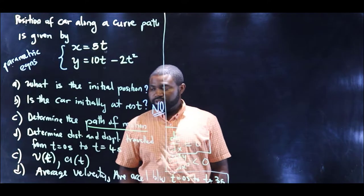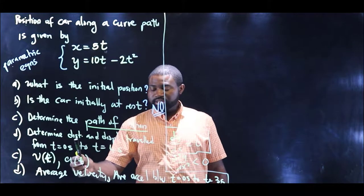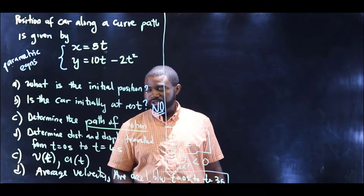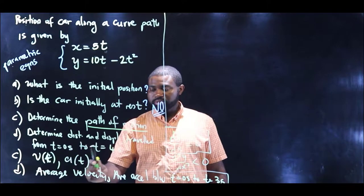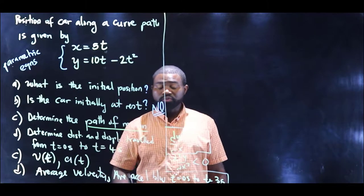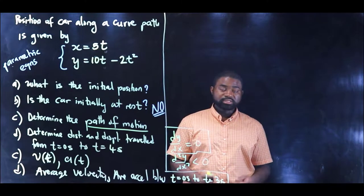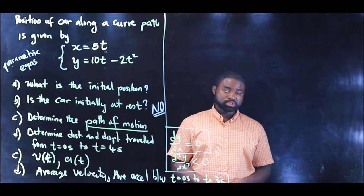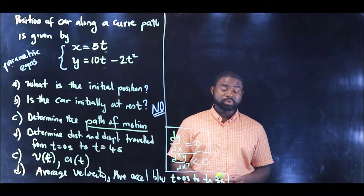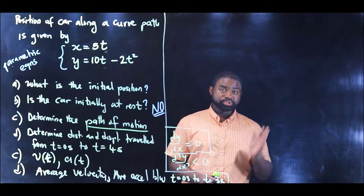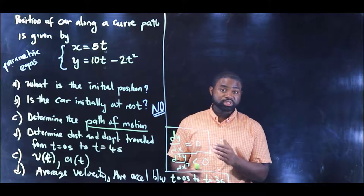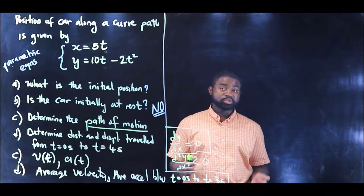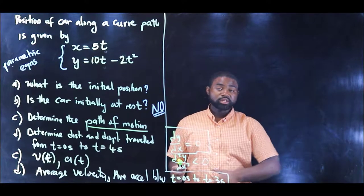The next question wants us to determine the distance traveled and the displacement traveled from t equal to 0 to t equal to 4 seconds. Distance is a scalar quantity that represents the length of path from the initial point to the final point. It doesn't depend on the initial and final point but it depends on the path that you take.